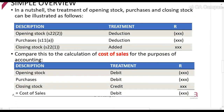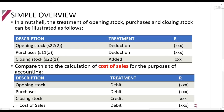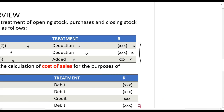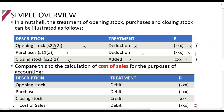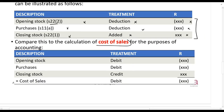Here's a simple overview of what we do. Opening stock under section 22(2) is a deduction. Tax purchases under section 11(a) are also a deduction. Closing stock you add back to income. So: deduction, deduction, add back — that is the same concept as cost of sales. Cost of sales: opening stock is a debit, purchases are a debit — so a debit in your statement of comprehensive income as a deduction. Closing stock is a credit, meaning you add it back. So you can see we are calculating a type of cost of sales.